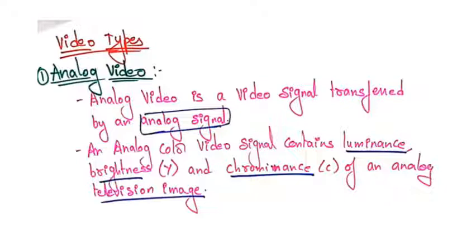Analog video is a video signal transferred by an analog signal. An analog color video signal contains illuminance (brightness) and chrominance. These are the parts of analog video.